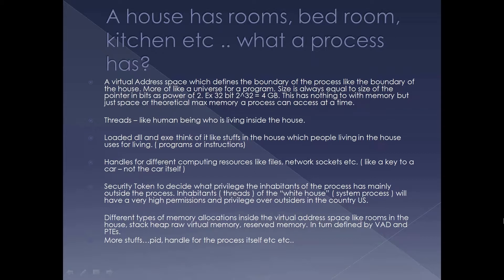Another component is something called a security token, which decides what privileges the inhabitants of the process mainly have. Different processes have different privileges. Taking the White House as an example — the single most important place where the President of the United States works — the inhabitants of that house have more privilege than outsiders. Similarly, there are system processes where threads run with administrator privileges, and it is the security token which determines those privileges.